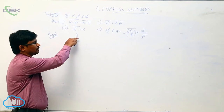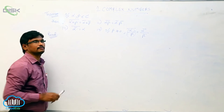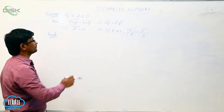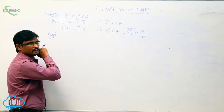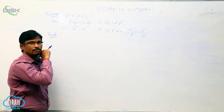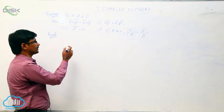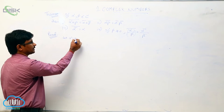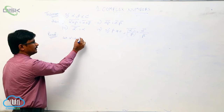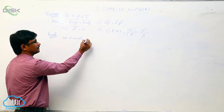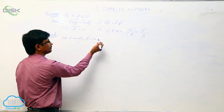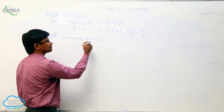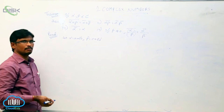We will see the sum properties in conjugate of complex numbers. Let two complex numbers alpha and beta. Consider alpha equal to A plus iB, and beta equal to C plus iD. These two belong to complex numbers.